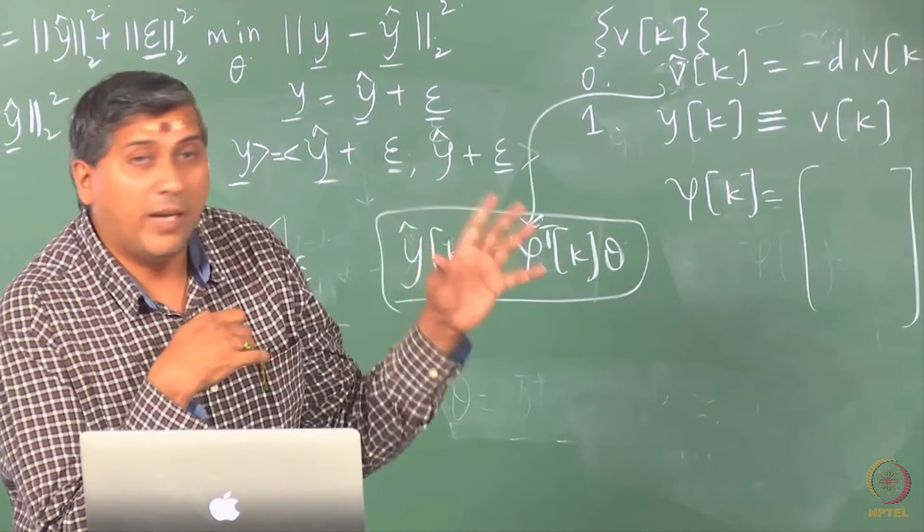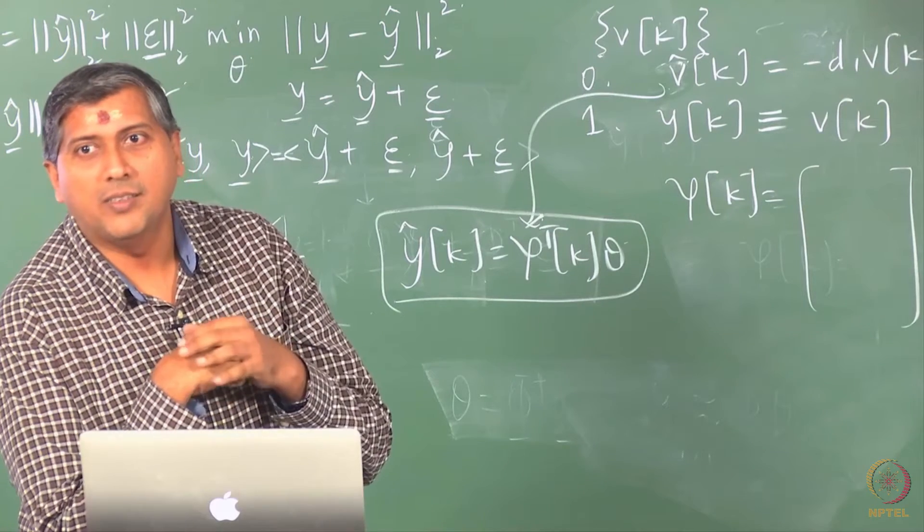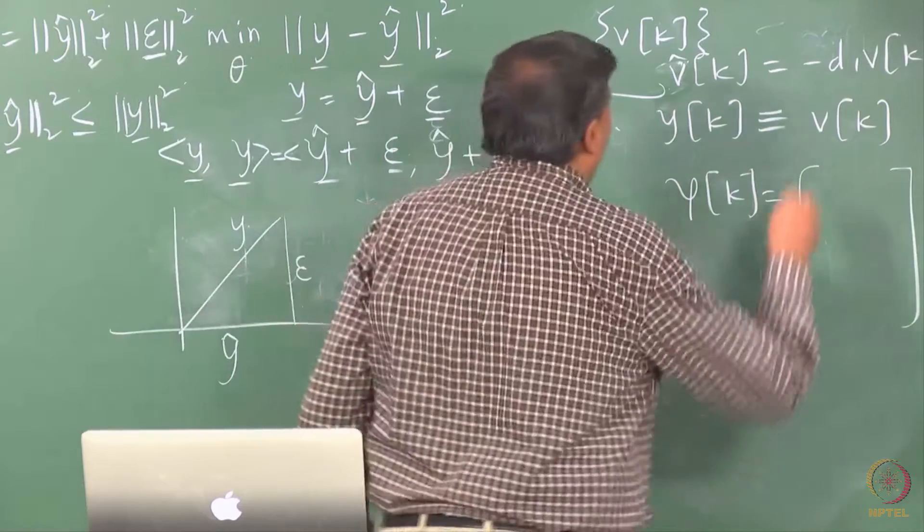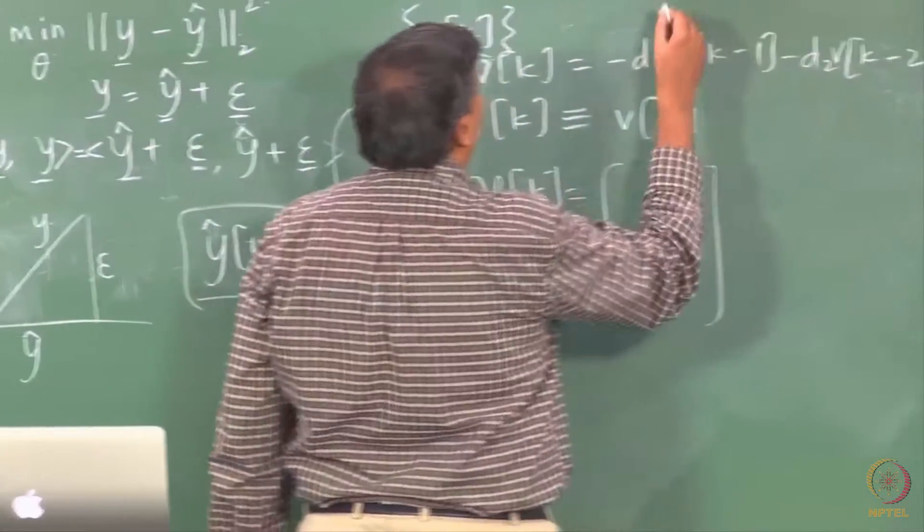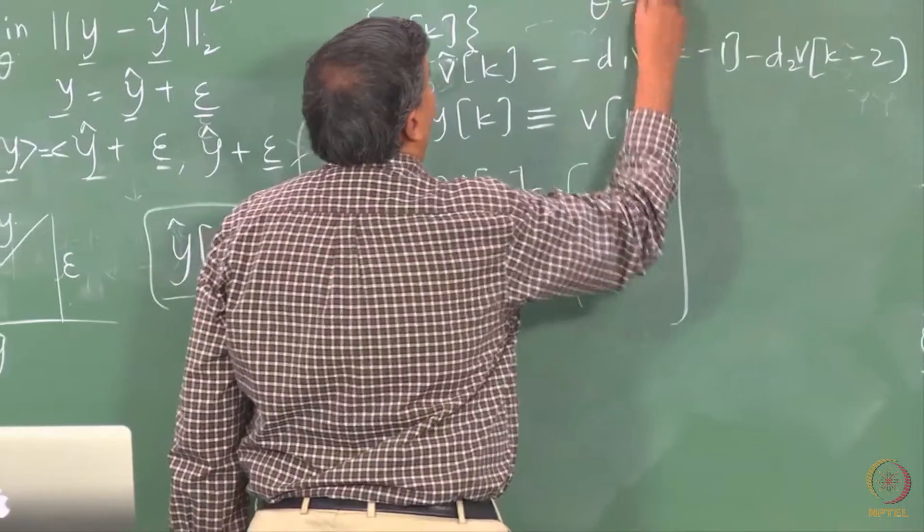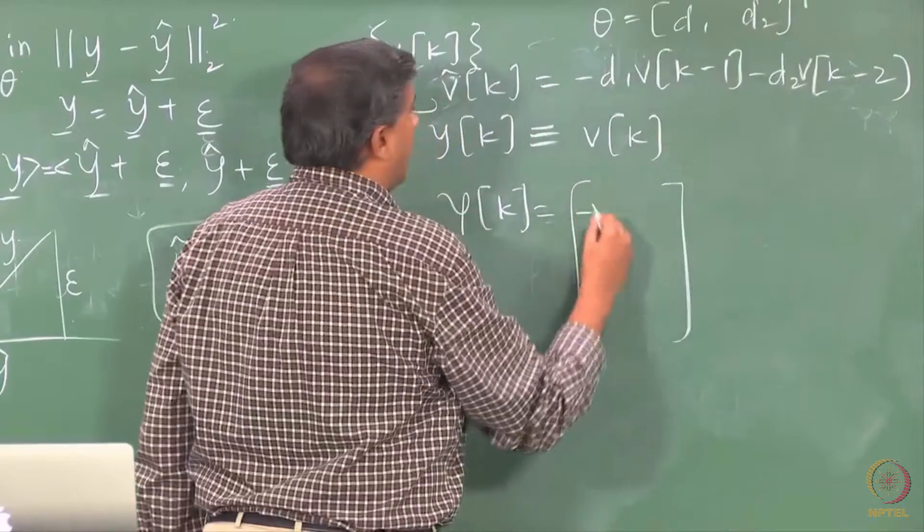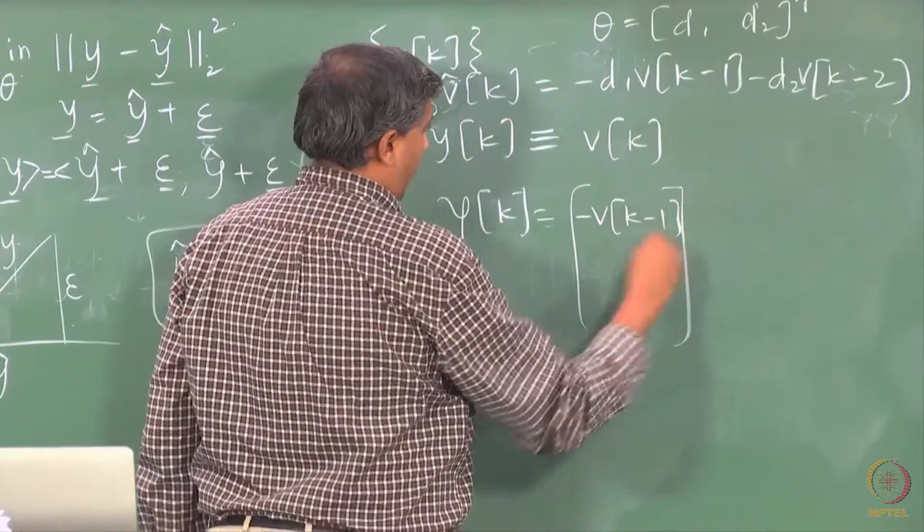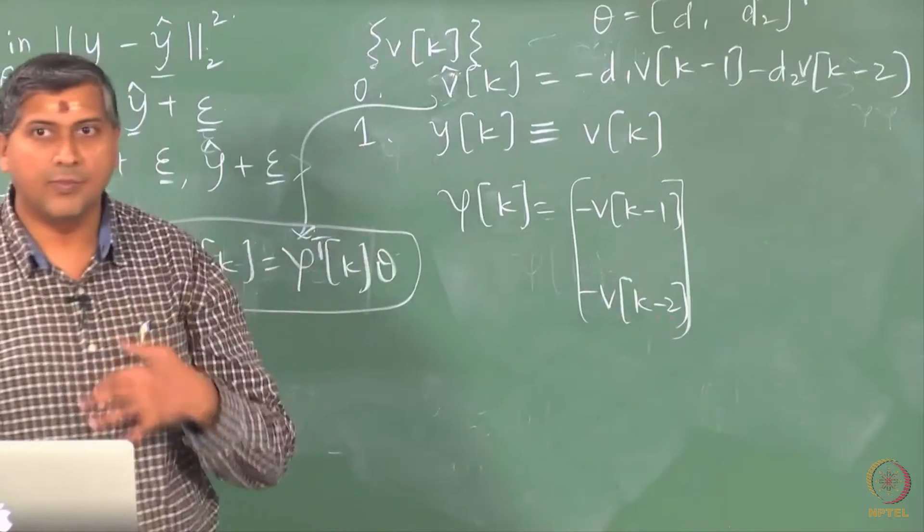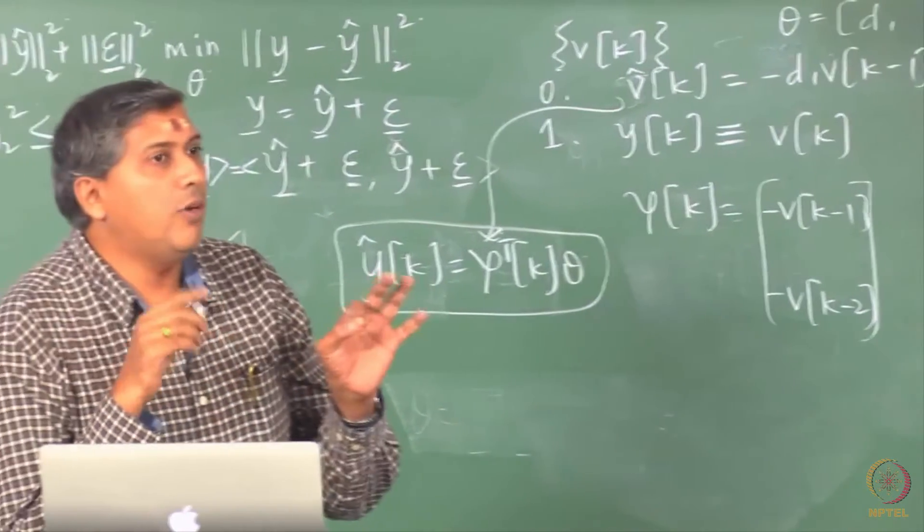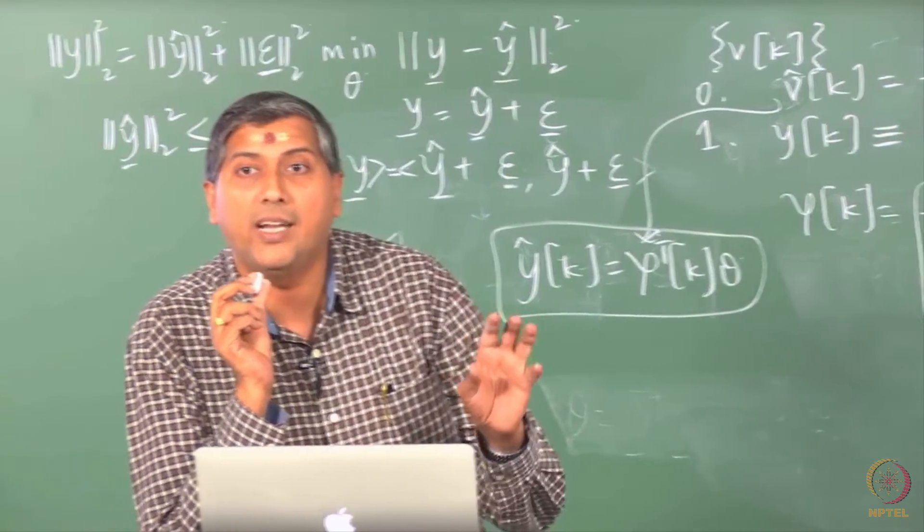What is the size of it? Regressor vector, not the matrix. 2 cross 1. 2 cross 1. 2 cross 1. What are the elements? Yeah, if you assume minus D1 to be theta that is okay, but if you assume, so you have to define what is theta first. If you say theta is D1 and D2 transpose then, okay.